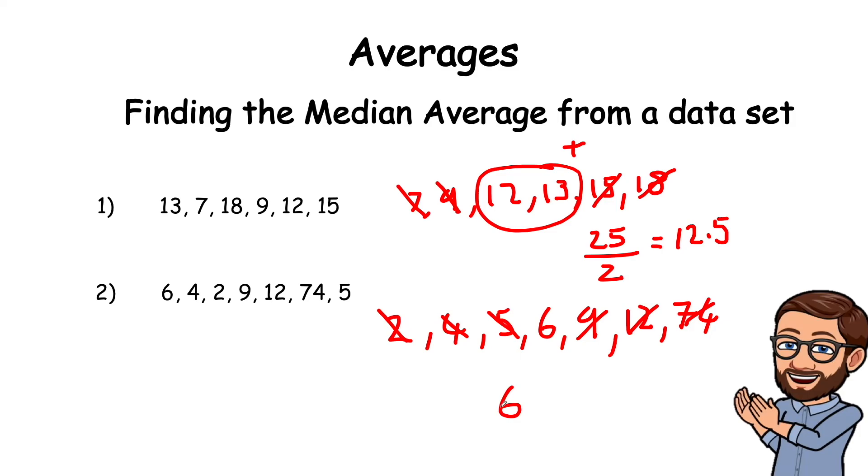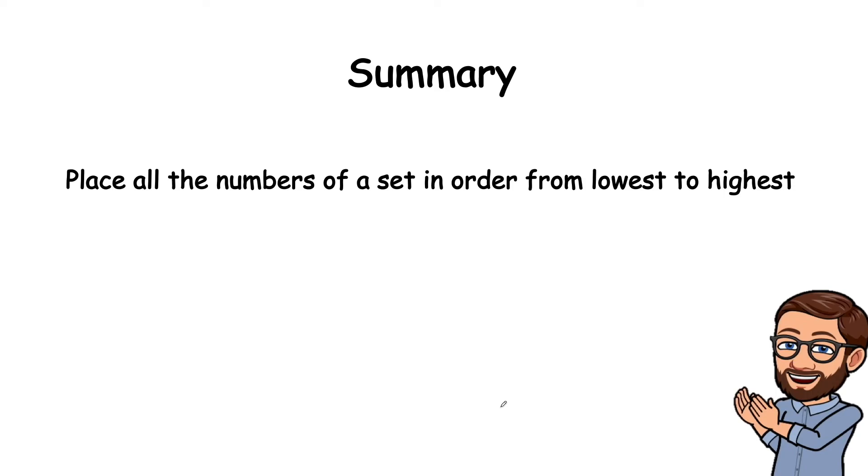So to summarize, place all the numbers of a set in order from lowest to highest. Identify the middle number, and if you can't find the middle number and you have two, total those together and then divide them by two.